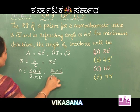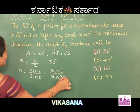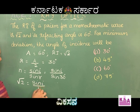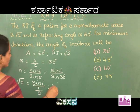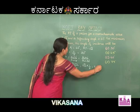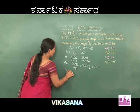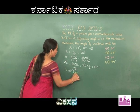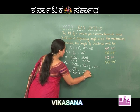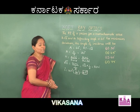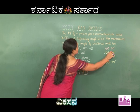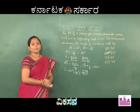Applying Snell's law: √2 = sin i / sin 30° = sin i / (1/2), so √2 × (1/2) = sin i. Therefore i = sin⁻¹(1/√2) = 45 degrees. The angle of incidence is 45 degrees, so option B is the correct answer.